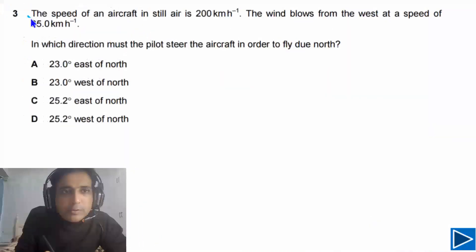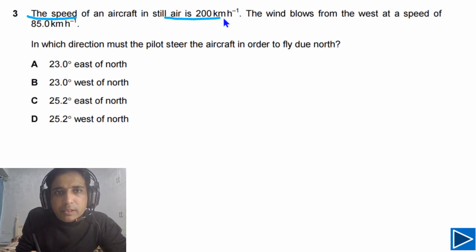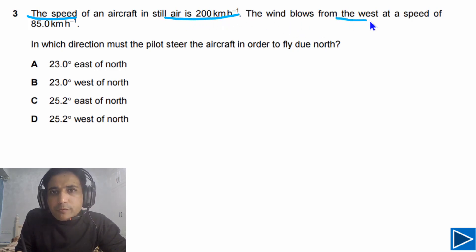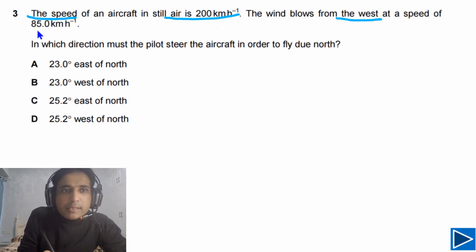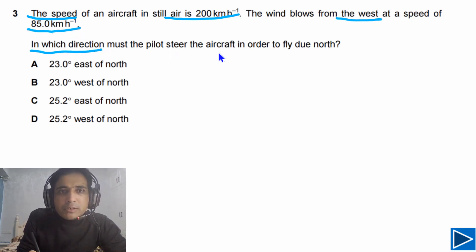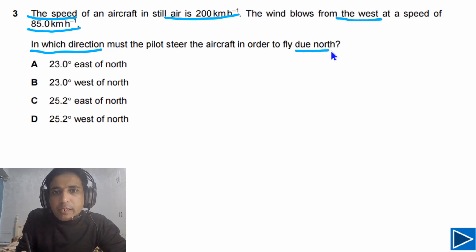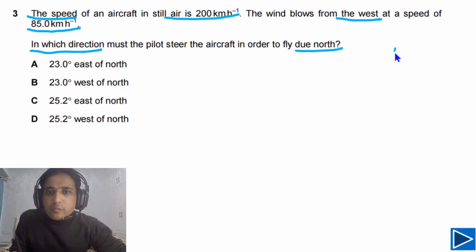For this question, it is given to us the speed of aircraft in still air is 200 kilometers per hour. The wind blows from the west at a speed of 85 kilometers per hour. In which direction must the pilot steer the aircraft in order to fly due north? We will be using a reference for directions.